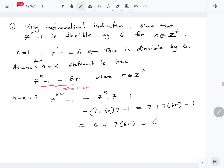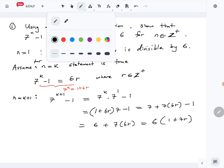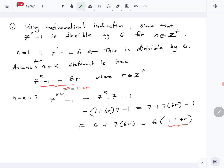So from here you can take 6 out, plus 7r. What is left is a positive integer.